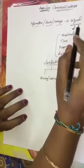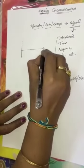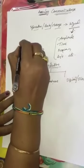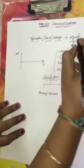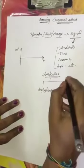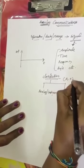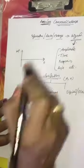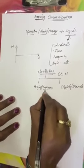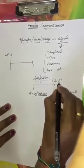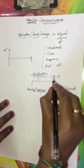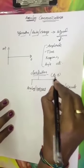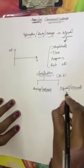A signal can be defined by the physical quantities of amplitude and time. On the x-axis I indicate time, and on the y-axis I indicate amplitude. The classification is also based on these two parameters. If both amplitude and time are continuous, the signal is called an analog signal or continuous signal. If both amplitude and time are discrete, the signal is called a discrete signal.